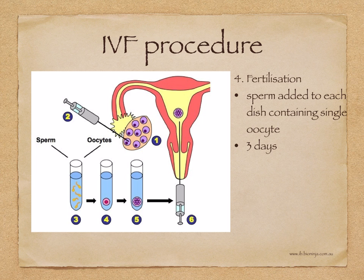Step 4 is fertilization. The motile sperm are added to a series of dishes, each containing a single oocyte. They are incubated together for about three days.